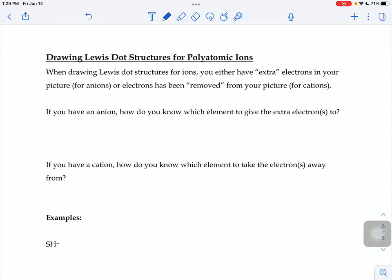When drawing structures for ions, you'll either have extra electrons in your picture if it's an anion, or we'll take some electrons away if you have a cation. So when you have an anion where there's extra electrons in your picture, how do you know which element to give the extra electrons to?